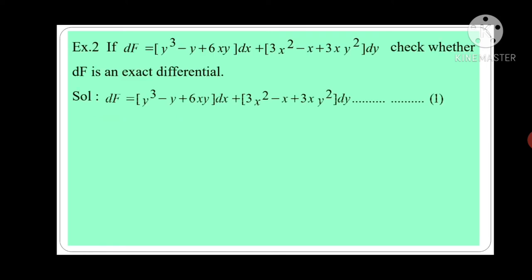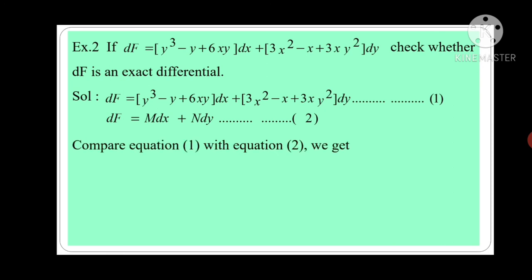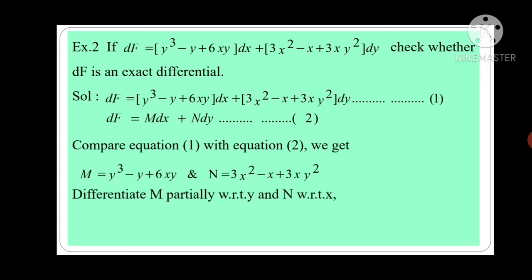Now see the second example. If df is equal to, in bracket, y³ minus y plus 6xy, bracket complete, dx plus, in second bracket, 3x² minus x plus 3xy², bracket complete, dy. Now check whether df is exact differential. We know if the condition del M by del y is equal to del N by del x is satisfied, then we can say the function is exact differential. So df is equal to (y³ minus y plus 6xy) dx plus (3x² minus x plus 3xy²) dy — equation first. Now df is equal to M dx plus N dy — equation second. Comparing equation first with second, we get M is equal to y³ minus y plus 6xy and N is equal to 3x² minus x plus 3xy².